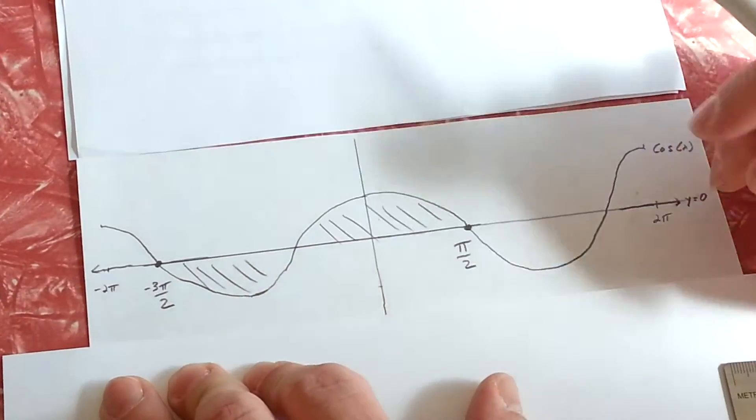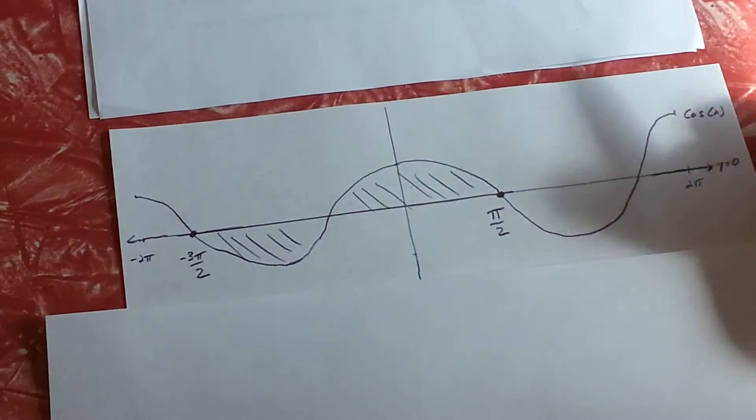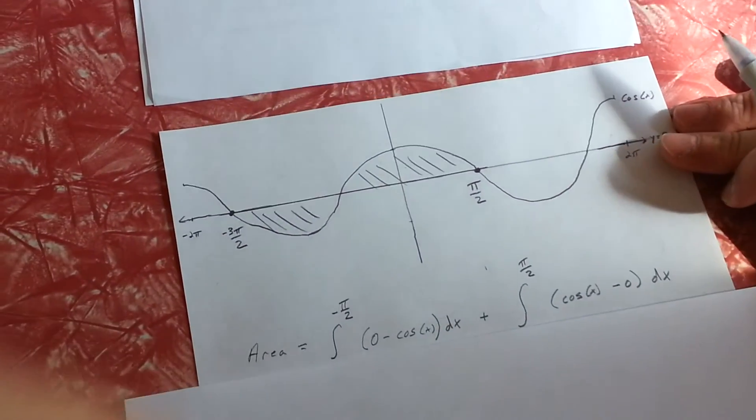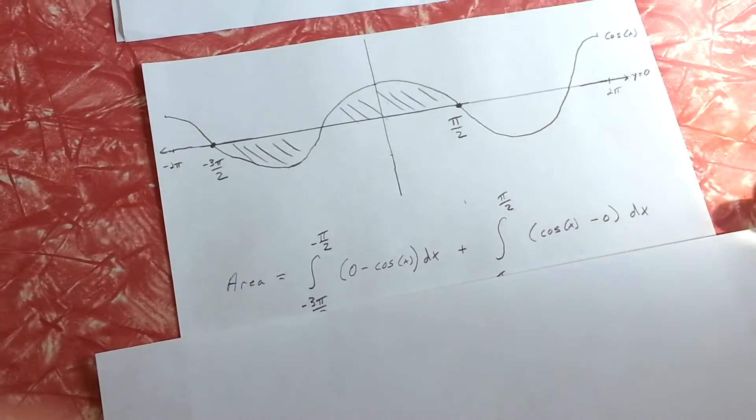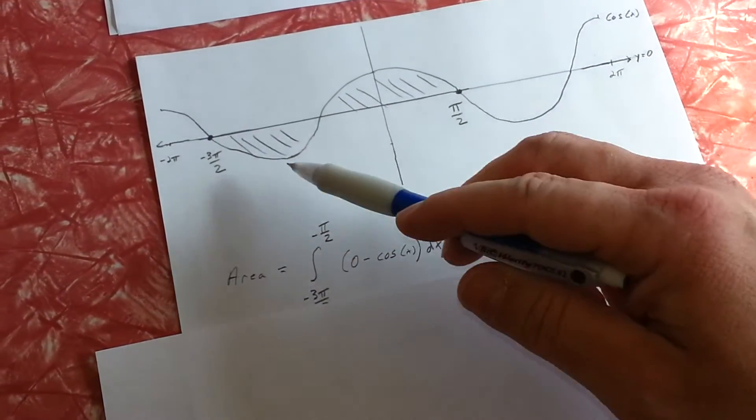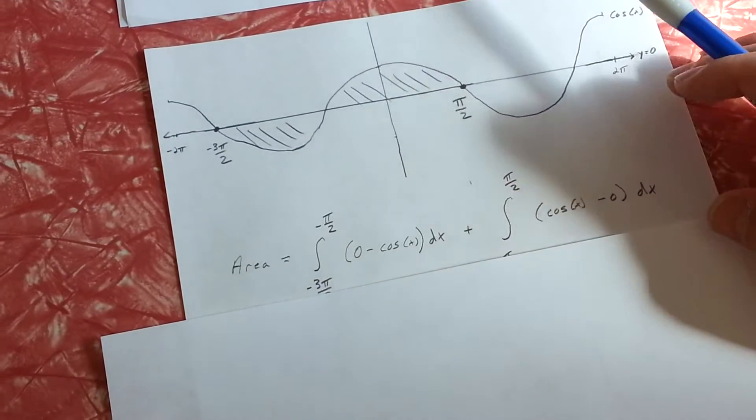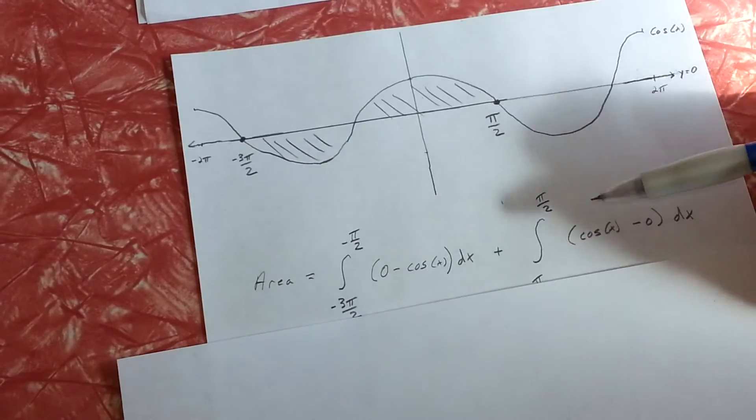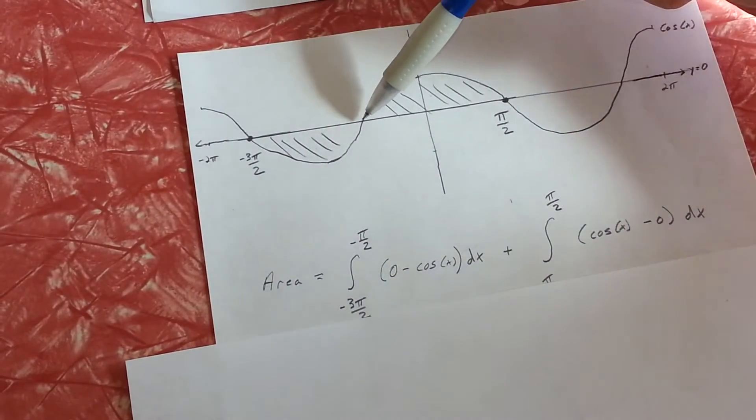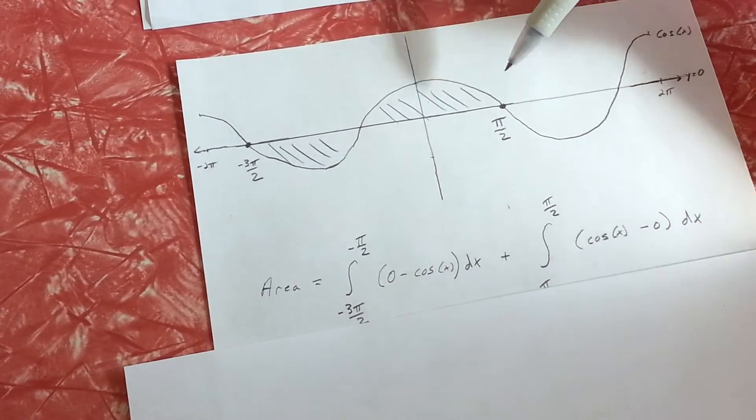So basically we're looking for two areas. The first area is between negative 3 pi over 2 and negative pi over 2, and then the second area is between negative pi over 2 and pi over 2.